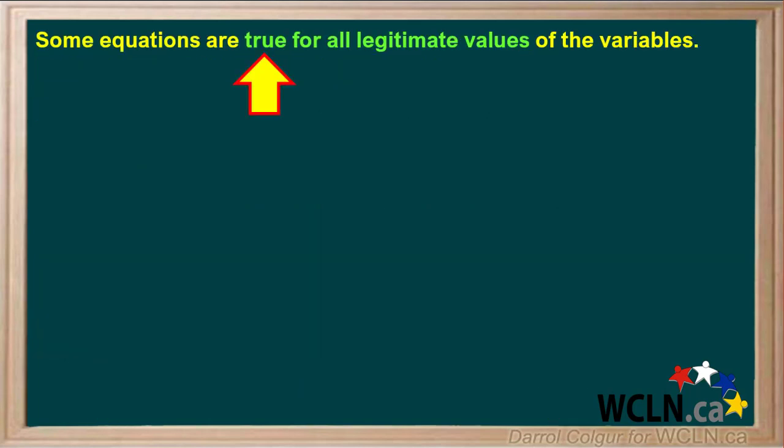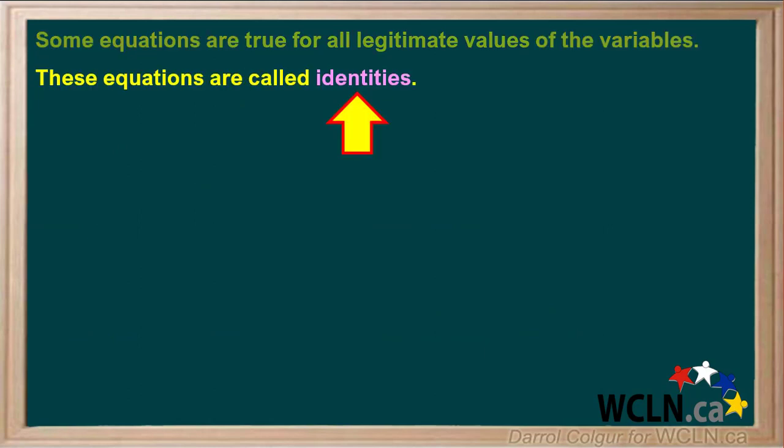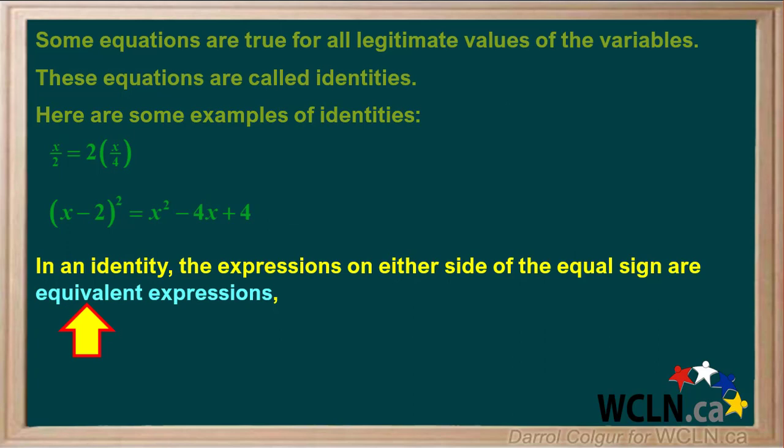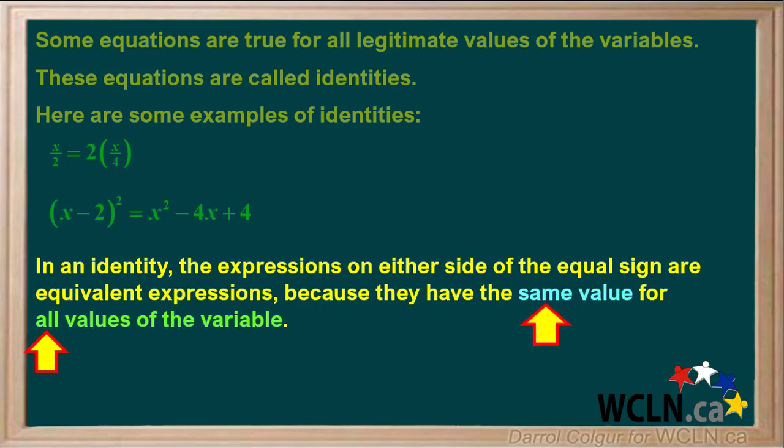Some equations are true for all legitimate values of the variables. These equations are called identities. Here are some examples of identities: x/2 is the same as 2x/4 for all values of x. This equation is also an identity. It is true for all values of x. In an identity, the expressions on either side of the equal sign are equivalent expressions because they have the same value for all values of the variable.